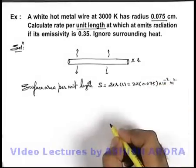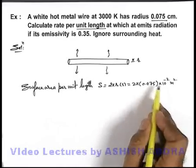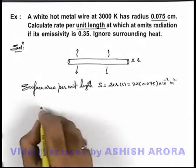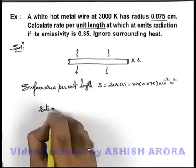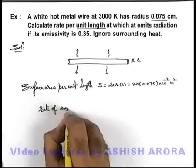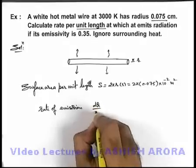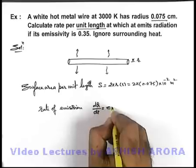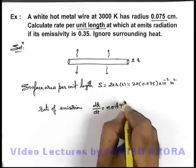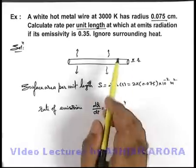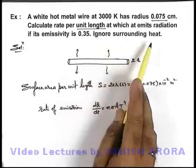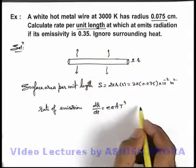So this'll be the total area from which the thermal radiation is emitted. And the rate of emission can directly be given by Stefan's law as dQ/dt is equal to εσAT to power four. As we are already given that we need to ignore the surrounding heat so we won't take any surrounding temperature.